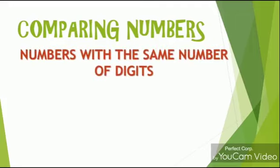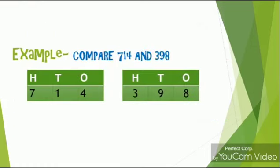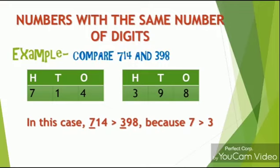Moving forward, here we can see how to compare numbers with the same number of digits. If two numbers have the same number of digits, we compare the extreme left digits. The number with the greater extreme left digit is the greater one. For example, compare 714 and 398. Both numbers have the same number of digits, but 714 has 7 as the extreme left digit while 398 has 3. Comparing 7 and 3, we can tell clearly that 714 is the greater one.